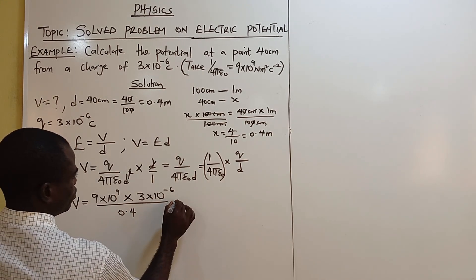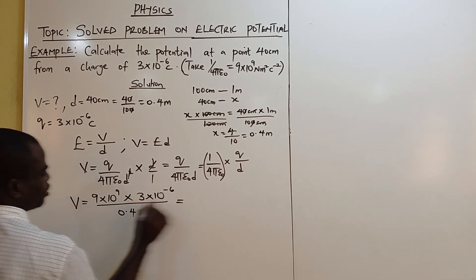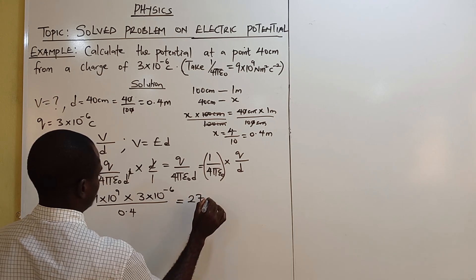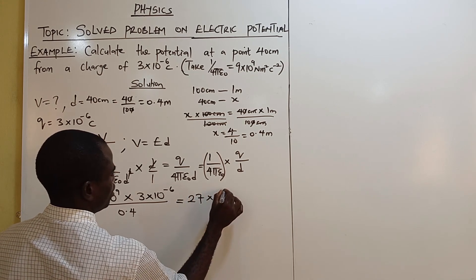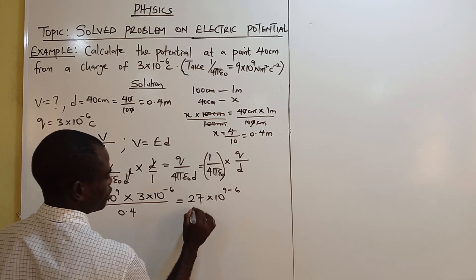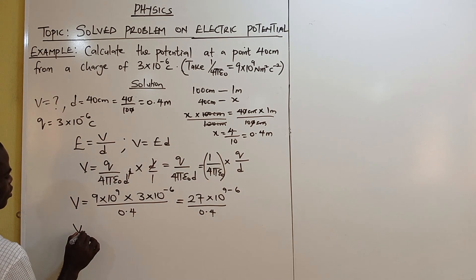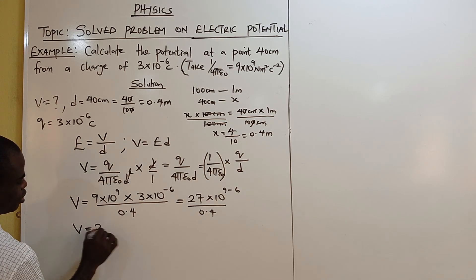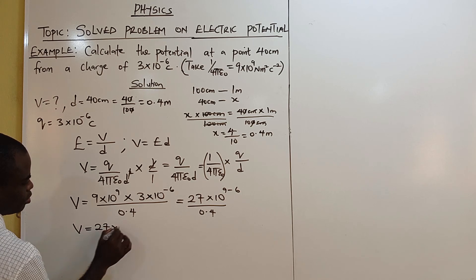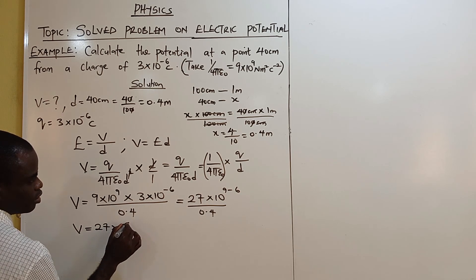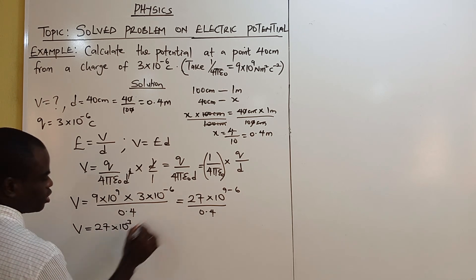This gives V equals 9 times 3, which is 27, times 10 raised to power 9 minus 6, which is 3.